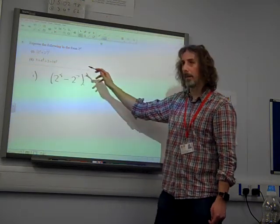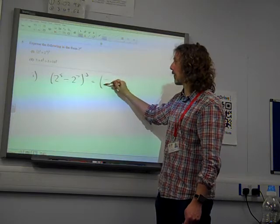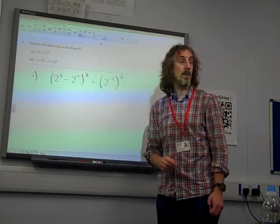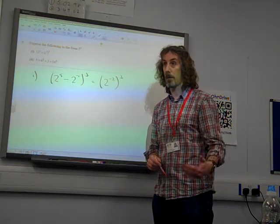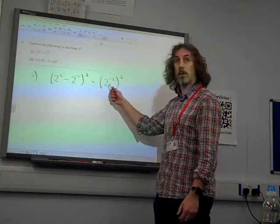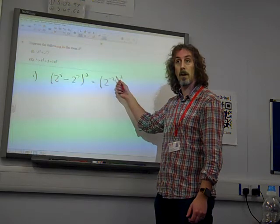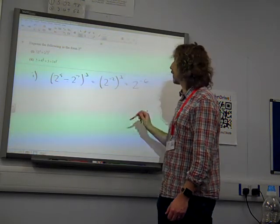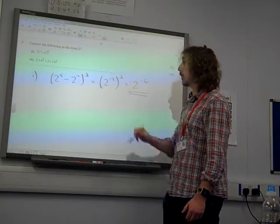So 2 to the 5 divided by 2 to the 7, we subtract the powers, that's 2 to the power of minus 2. And then the next rule down on our poster says that in that situation you multiply the powers, so minus 2 times 3 gives us 2 to the minus 6, and there's our two marks, just like that for this one.